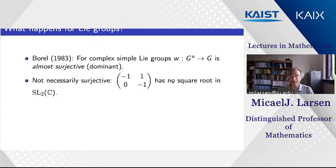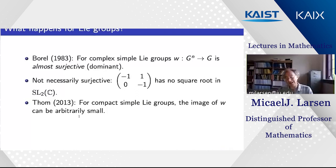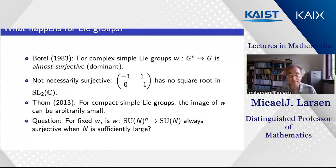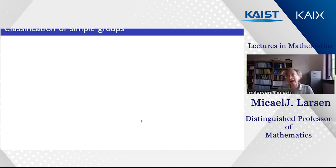Passing from complex simple Lie groups to compact simple Lie groups, the story looks rather different. Andreas Tom proved that the image of w can be arbitrarily small: for a fixed compact simple Lie group, you can choose a word w so that the image lies in an arbitrarily small neighborhood of the identity. On the other hand, if you fix the word first and let the group grow in dimension — say looking at SU(n) — my guess is the word map becomes surjective, though we don't have much evidence yet.